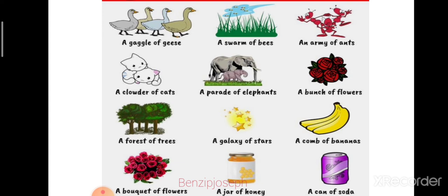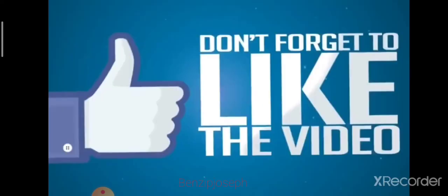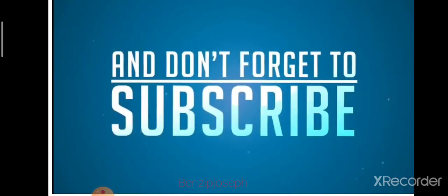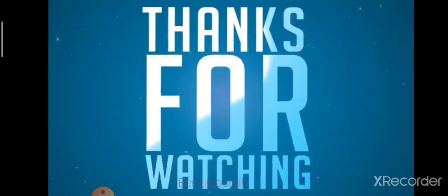These are the collective forms of nouns that refer to each animal, thing, or person. Do you understand? Hope you like — don't forget to like the video, share the video, and subscribe. Thank you for watching.